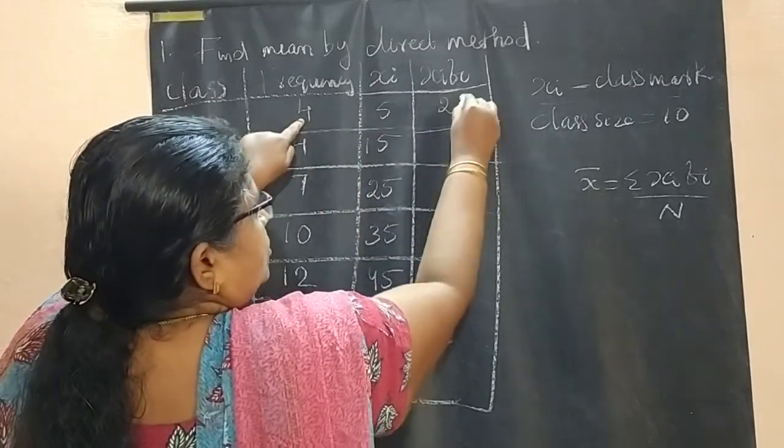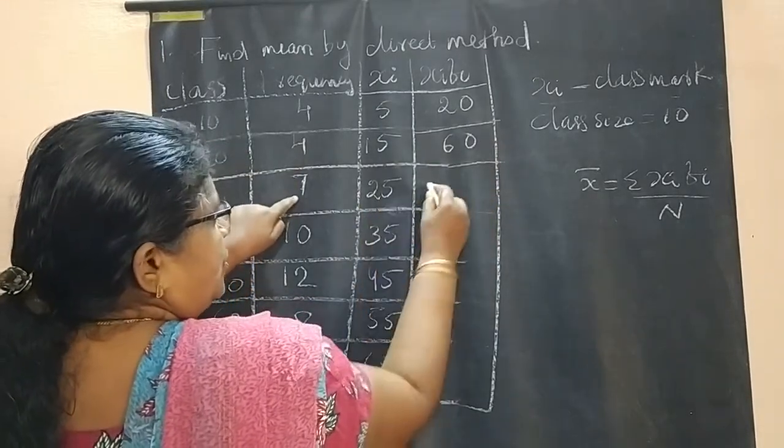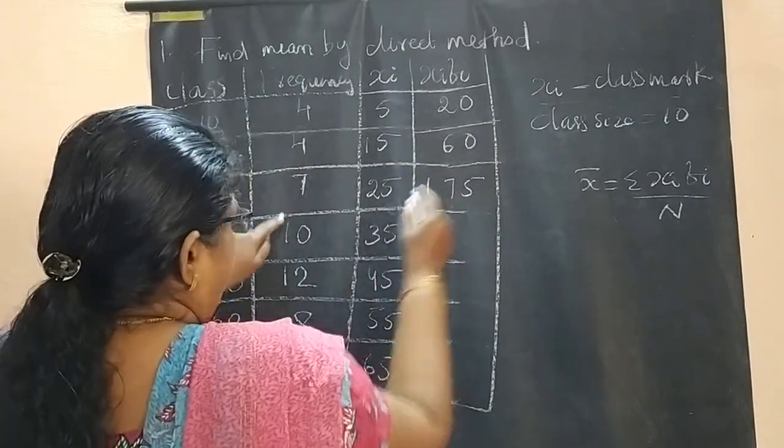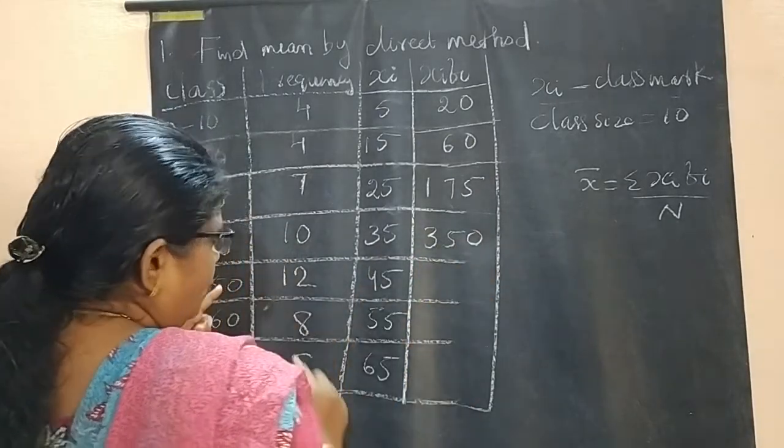4 × 5 = 20. 4 × 15 = 60. 7 × 25 = 175. 10 × 35 = 350.